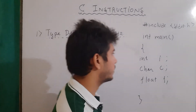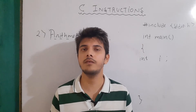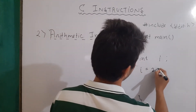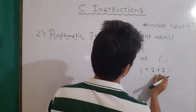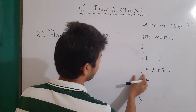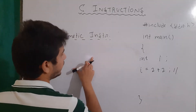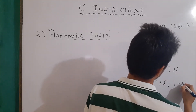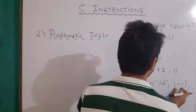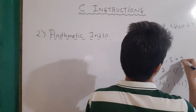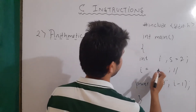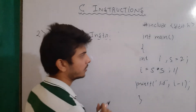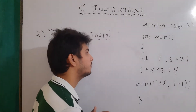Then we have arithmetic instructions. These instructions are used to perform operations between variables and constants. For example, if we have a variable 'i' and write i = 2 + 2, we are performing an arithmetic addition operation and assigning the result to the variable 'i'. We can also perform operations like i - 1, or s multiplied by s. Other operations like addition, subtraction, multiplication, division, and modulus can also be applied in arithmetic instructions.